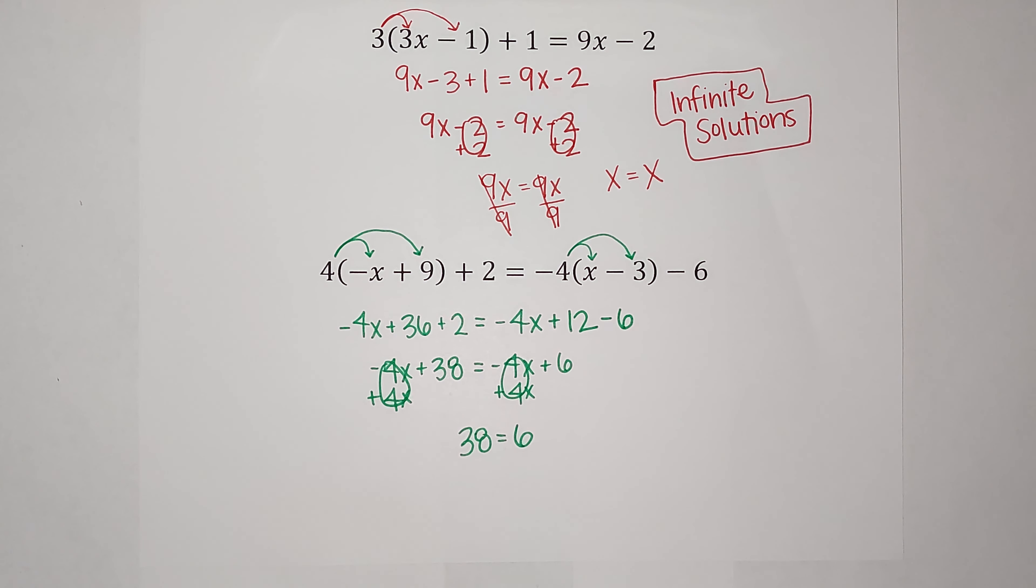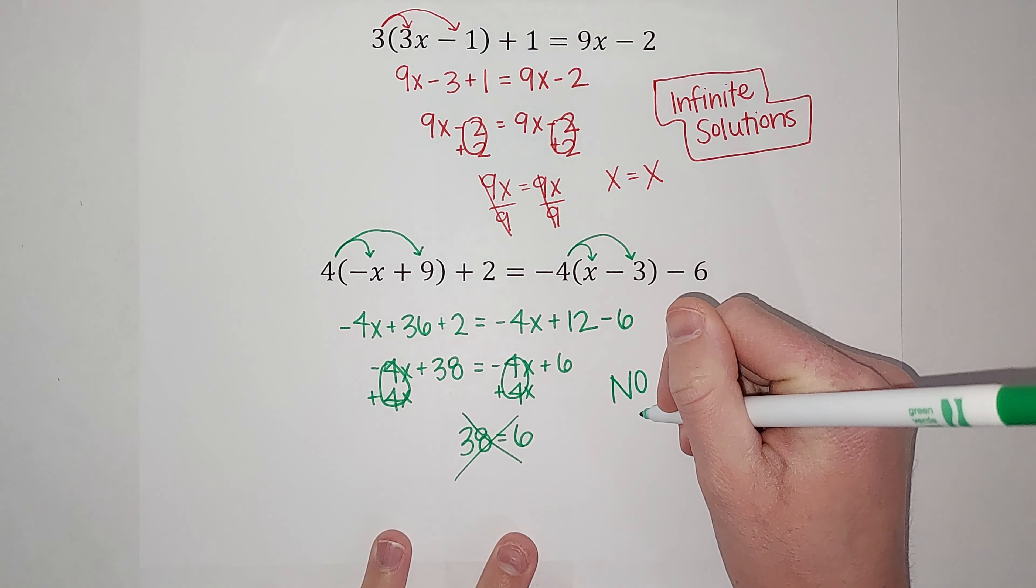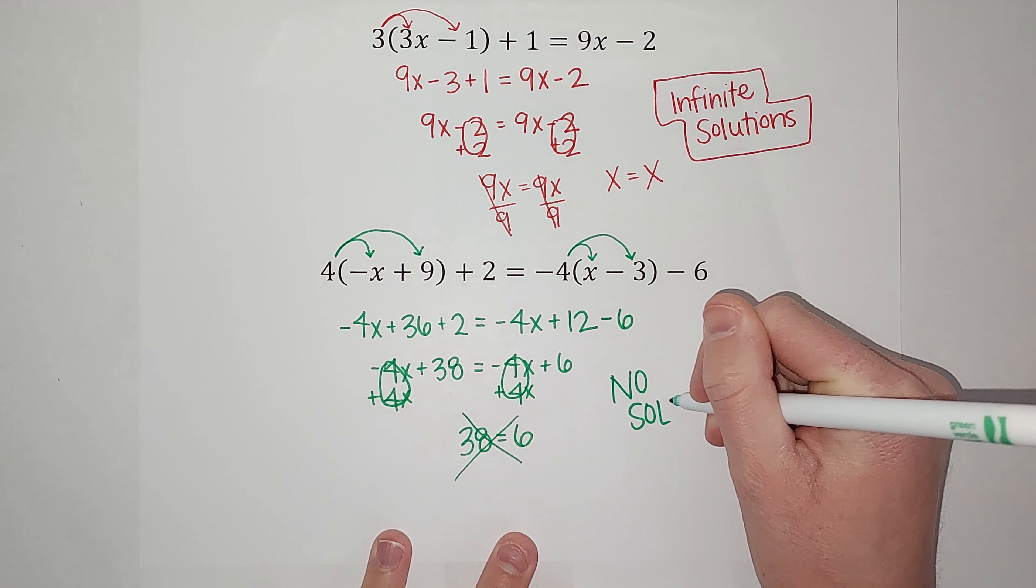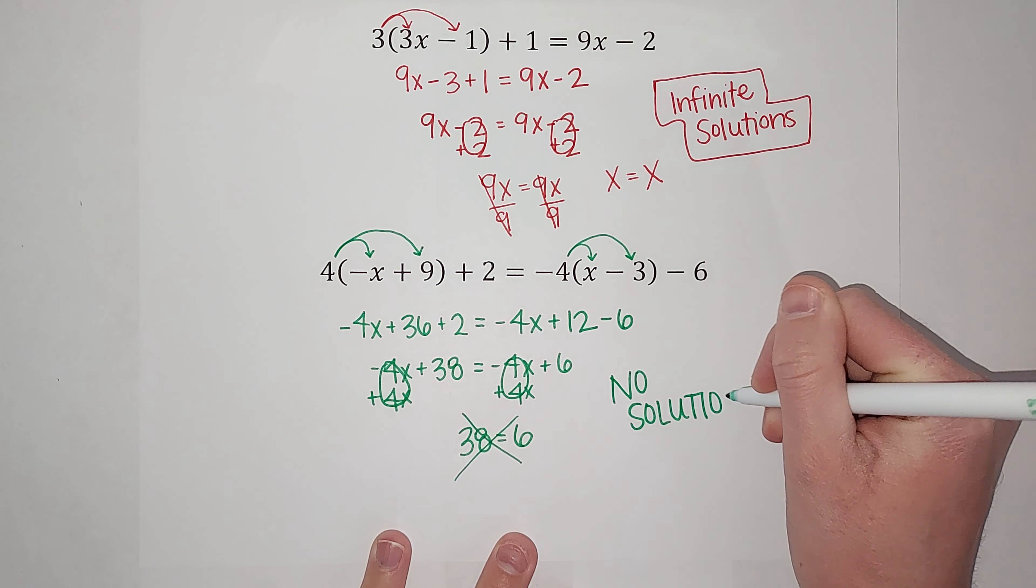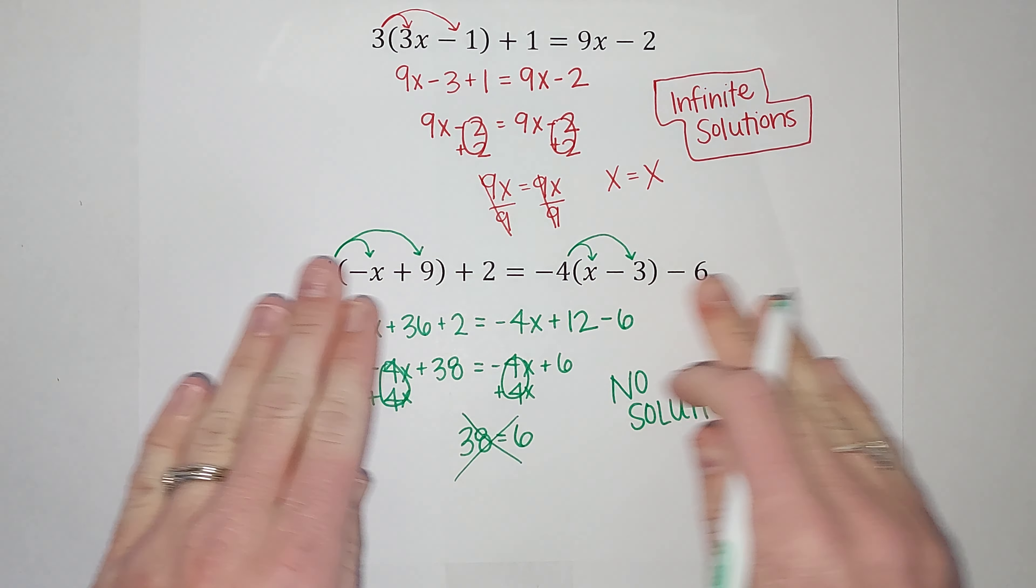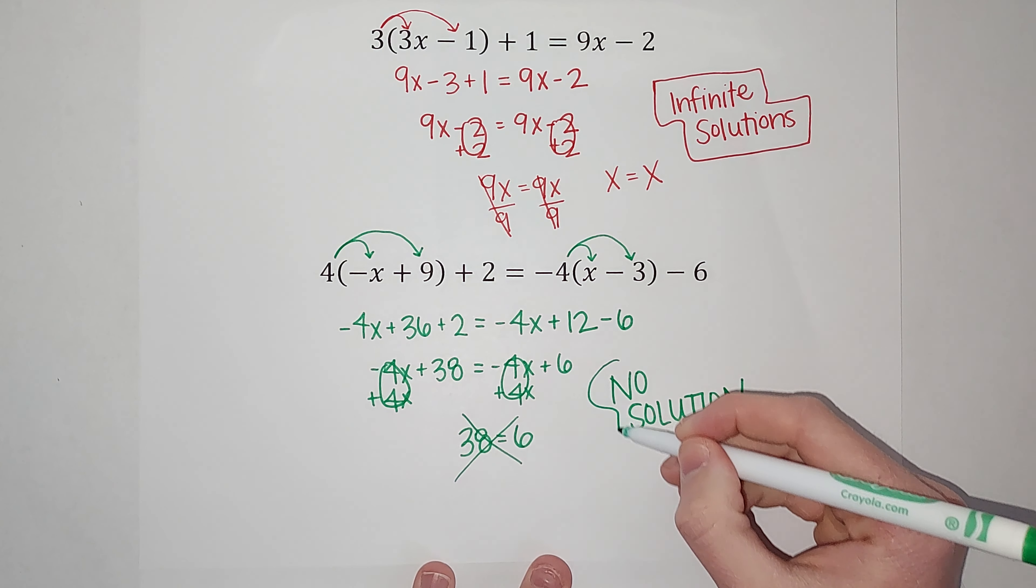So if you get something like this where your x's cancel or something cancels and you're left with something that's not true, this means there is no solution. Meaning there is no number you can plug in for x that will make this statement true.